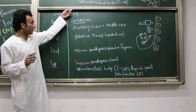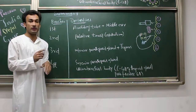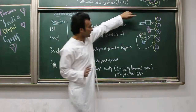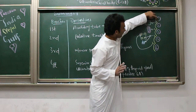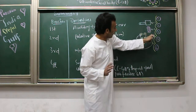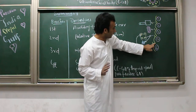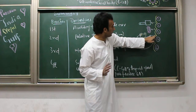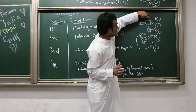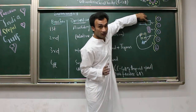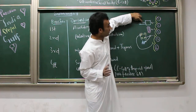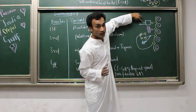Now here is the summary for the pharyngeal pouches. First pharyngeal arch, second, third, fourth, and sixth — on the inner side they are covered by endoderm, and the depressions between arches are called pharyngeal pouches. The first pharyngeal pouch forms the middle ear cavity and auditory tube (also called pharyngotympanic tube). The second forms the palatine tonsils.